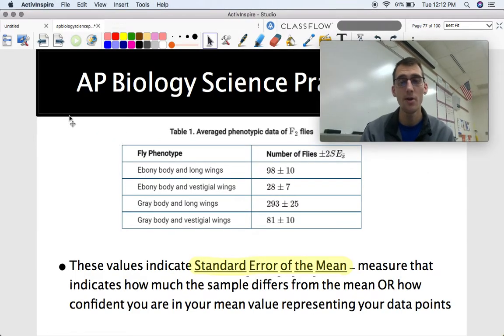We have this plus or minus symbol all the way down here on our data points and then we have capital S, capital E, and then this little X with a bar on top of it. So what does that exactly mean and what are these numbers indicating over here? Well these numbers are what we call standard error of the mean. And it's a measure that indicates how much the sample differs from the mean or how confident you are in your mean value representing your data points.